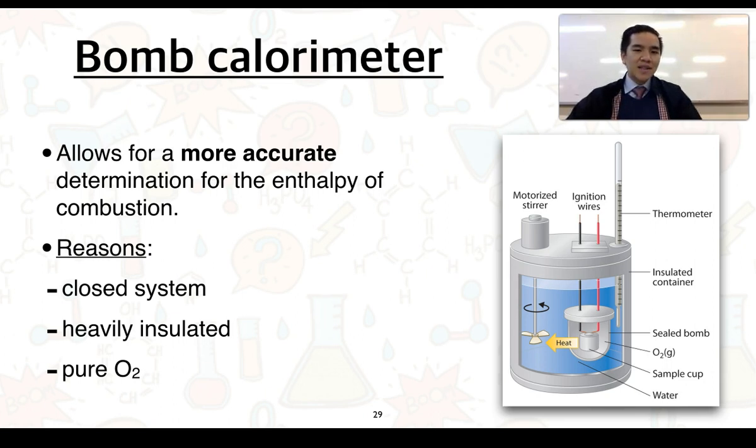Bomb calorimeters are essentially the devices that we use to determine the accepted values for the enthalpies of different reactions. They can also be used to determine the energy values which are quoted for many different foods and you see this on the back of your food packets.